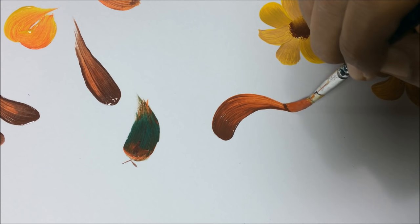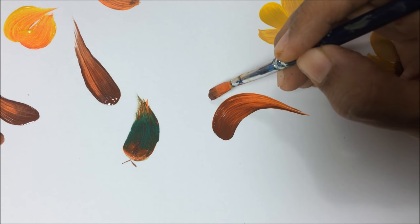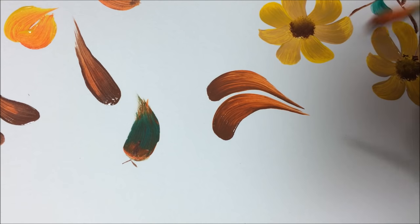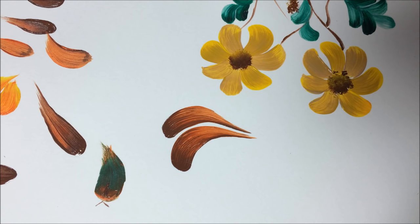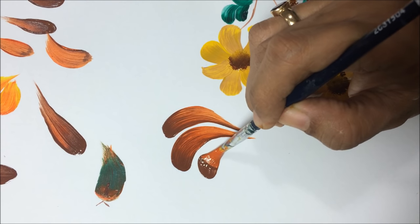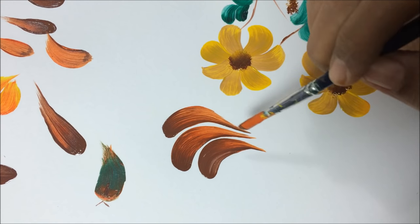So in that case, I should either add extender to the paint or water to the paint to give it more extending power. So here I added water into tipping color, watered it down very little bit, and I tried again. Now you can see how my strokes were coming perfectly the way it should have been.